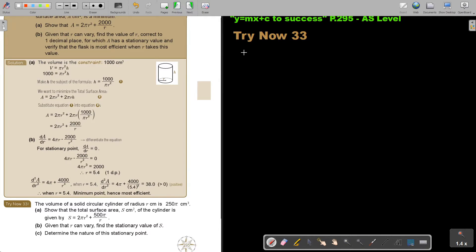Let's start. The volume of a solid circular cylinder of radius R centimeter is 250 cubic centimeters. Show that the total surface area, so we are going to use S in this case, of the cylinder is given by this. Now first start with the volume. Let me, I like to first draw a picture. This is the cylinder.